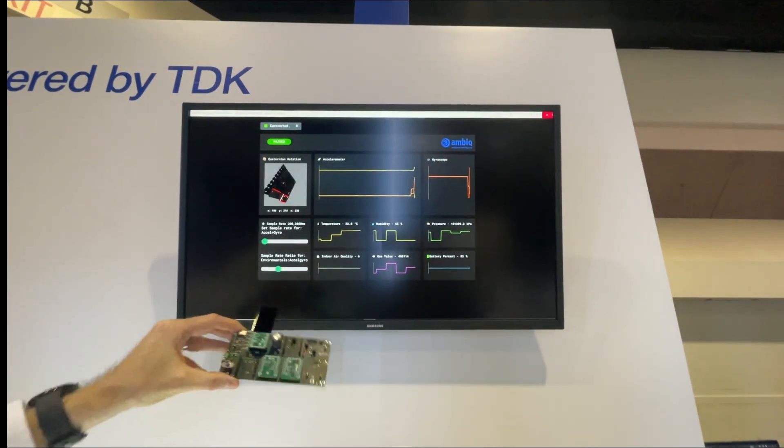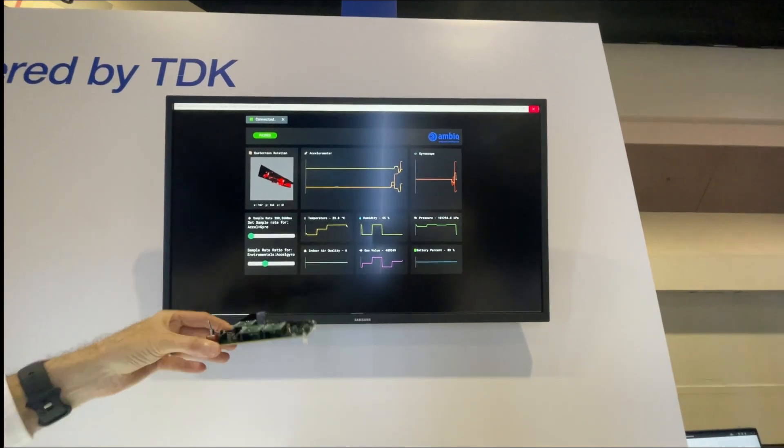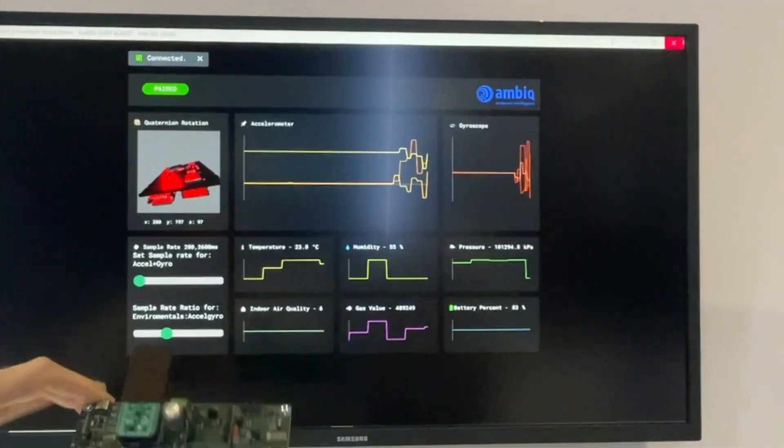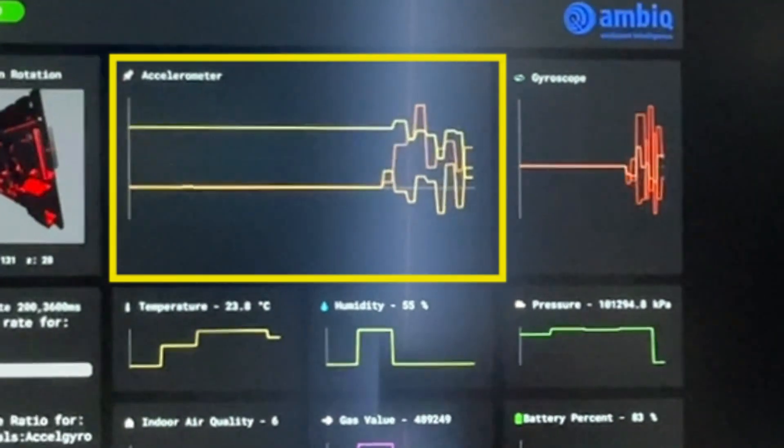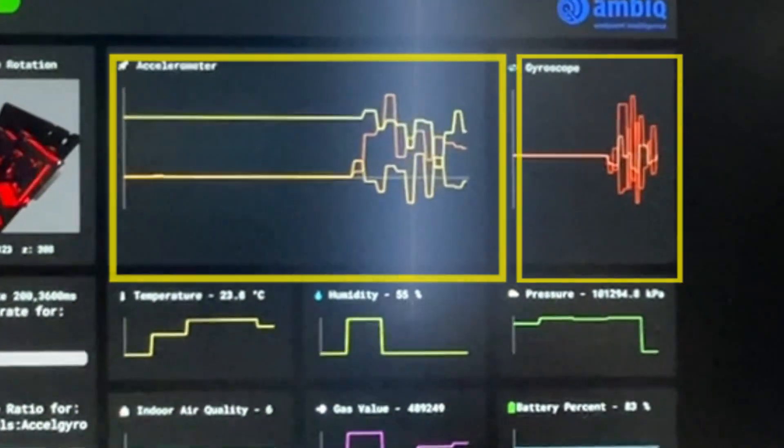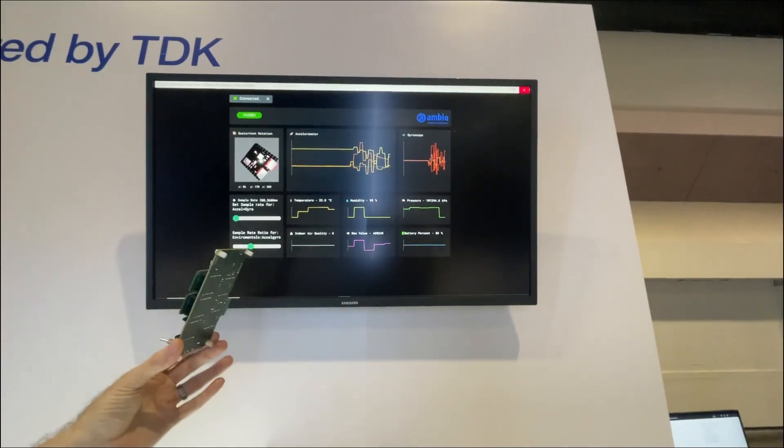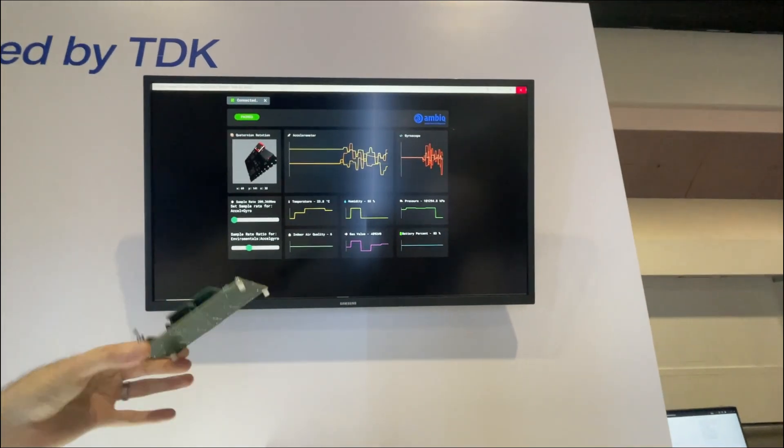As we move the board physically, the TDK IMU is reporting its accelerometer data and gyroscope data, and then we're computing that data to determine an approximation of the board in free space.